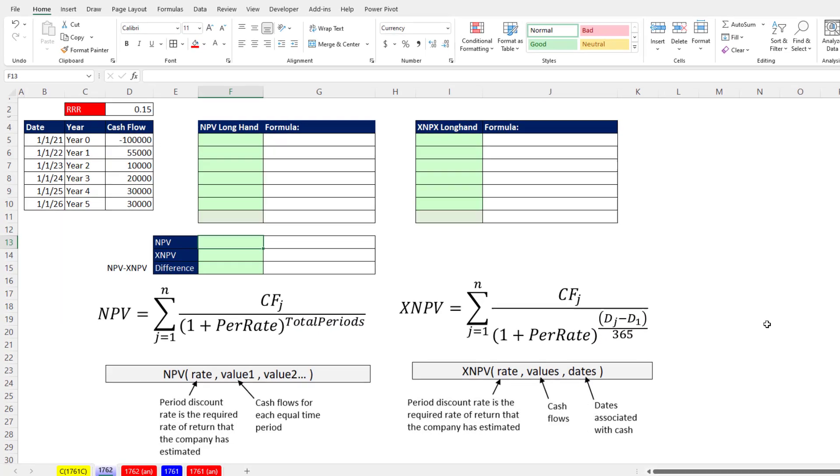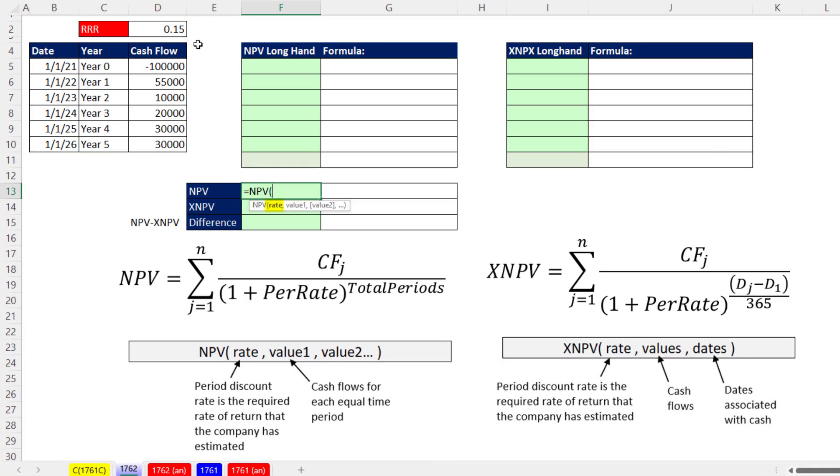If we start off with NPV, we have our required rate of return, the discount rate, comma, and values. It's going to infer the number of periods and assume that they happen at the end of each period. For NPV, you cannot include time zero. So there it is, one to five years cash flows. We close parentheses, and we have to add the negative cash flow from time zero. When we hit Enter, we get 605.75.